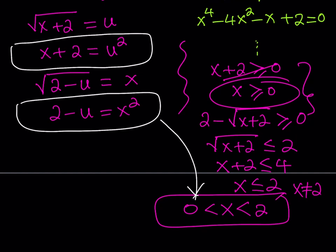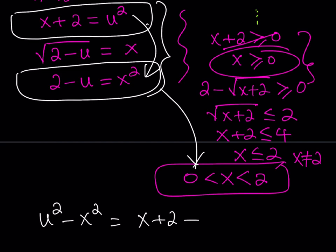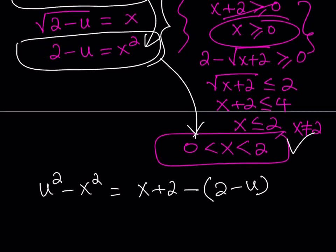Now let's solve the system: x plus 2 equals u squared, and 2 minus u equals x squared. I'll subtract them. On the right-hand side: u squared minus x squared. On the left-hand side: (x plus 2) minus (2 minus u) gives x plus u. Always remember x must be between 0 and 2, not inclusive.